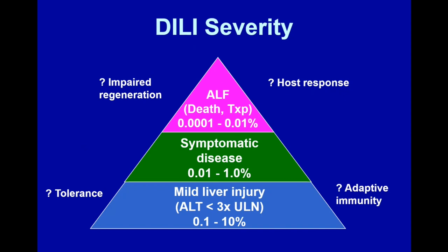There are different severities of DILI. There can be mild liver injury — low-level transaminase elevations less than three times upper limit of normal — and often when a drug does this frequently, many patients will develop tolerance over time. The perfect example is isoniazid: we know that 10 to 20% of otherwise healthy people who get INH for latent TB will get mild transaminase elevations, but even when you continue the drug they can go away, suggesting adaptive mechanisms. However, about 1 in 500 to 1 in 1,000 will go on to progressive hepatitis with jaundice. Then a subgroup will go on to acute liver failure, characterized by coagulopathy and encephalopathy.